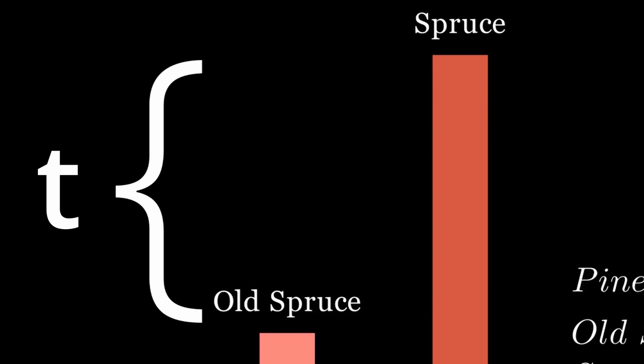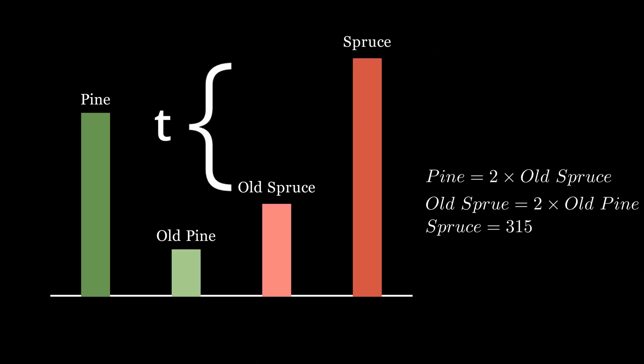We have the variable t. Time has passed between the old spruce and the new spruce, and also between the old pine and the new pine. This is another variable and another set of equations we can work with, and we can actually solve it now.